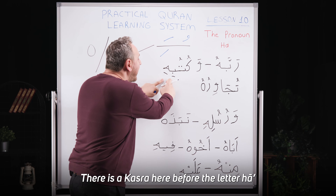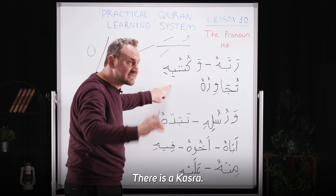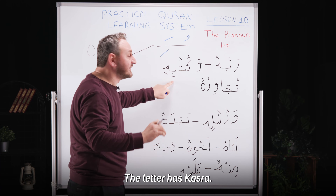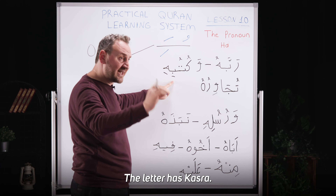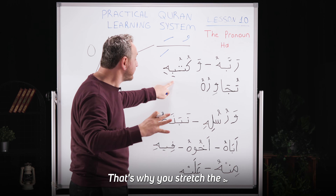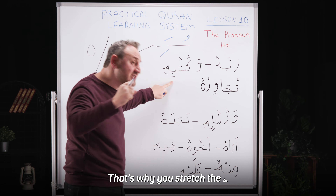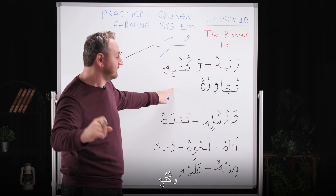Next example: Ve kütübihi. You see — ve kütübihi — there is a kesra here before the letter Ha. The letter has kesra, that's why you stretch the Ha.